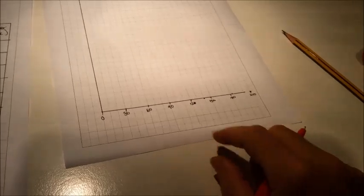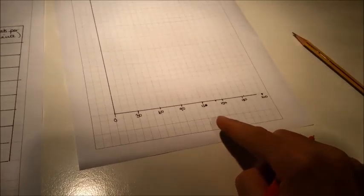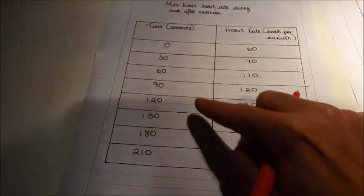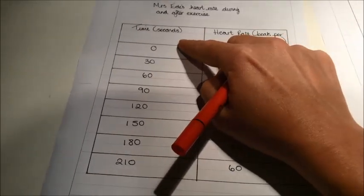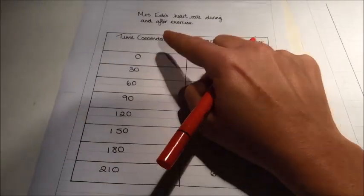But first of all, I also need to put in a label for my axis. So we go back to the chart, and the label that I've got at the top of the information is time in seconds. So let me put that in as well.